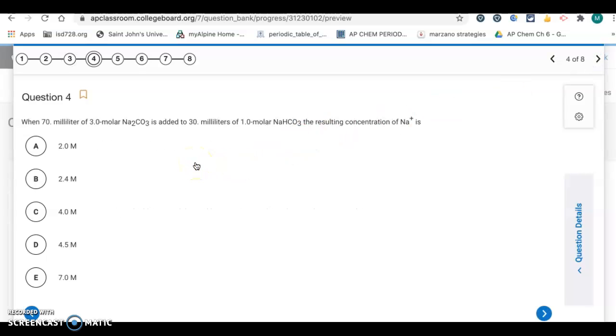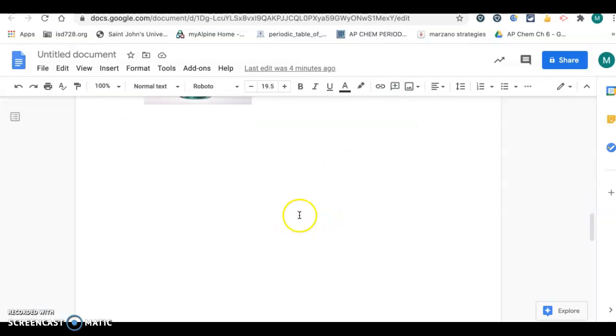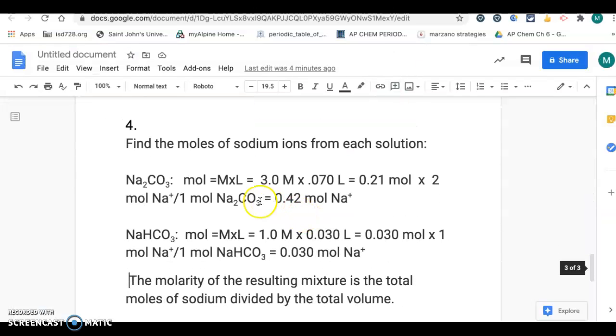Question number four. When 70 milliliters of 3.0 molar Na2CO3 is added to 30 milliliters of 1.0 molar NaHCO3, the resulting concentration of sodium ions is? So, this is another calculation, I'll show that over here. So, first of all, we want to find the moles of sodium ions from each solution. So, the calculation for each of these original solutions is right here.